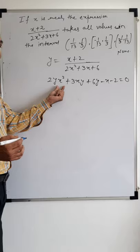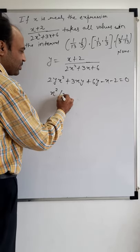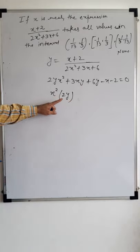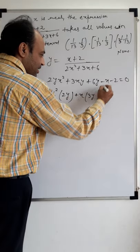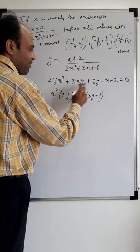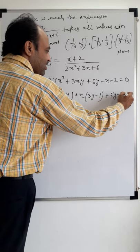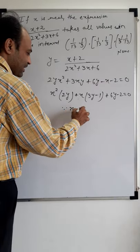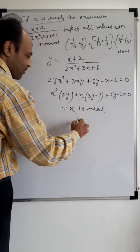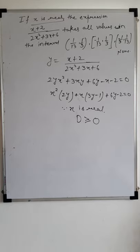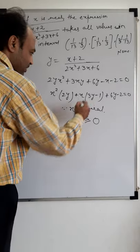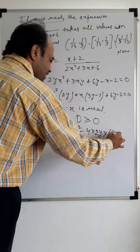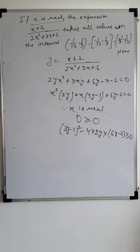This is a quadratic in x. Collecting terms: coefficient of x² is 2y, coefficient of x is (3y - 1), and the constant term is (6y - 2). So we have 2y·x² + (3y-1)·x + (6y-2) = 0. Since x is real, the discriminant must be greater than or equal to 0. So b² = (3y-1)² minus 4·a·c must be greater than or equal to 0.